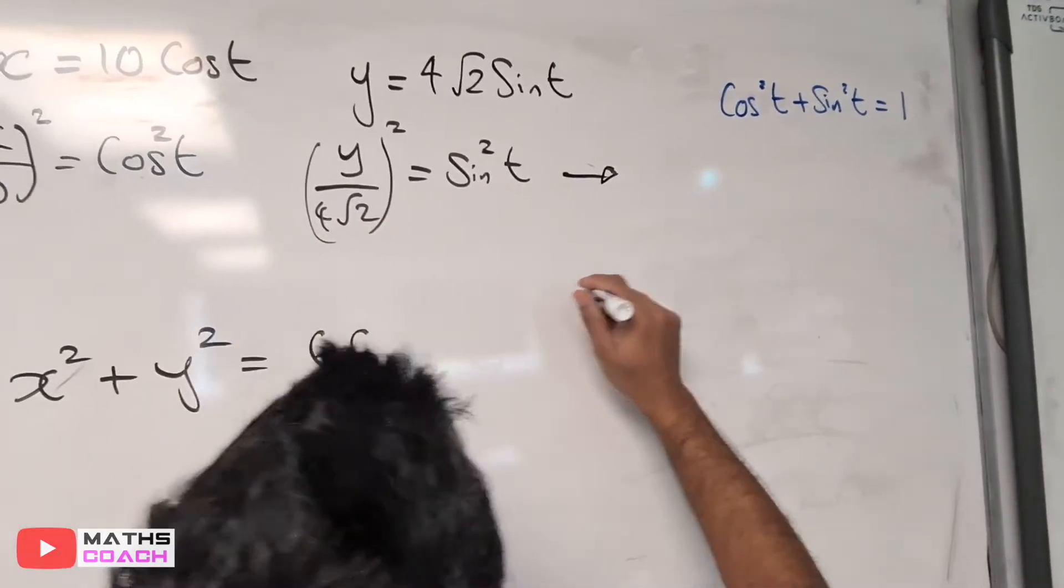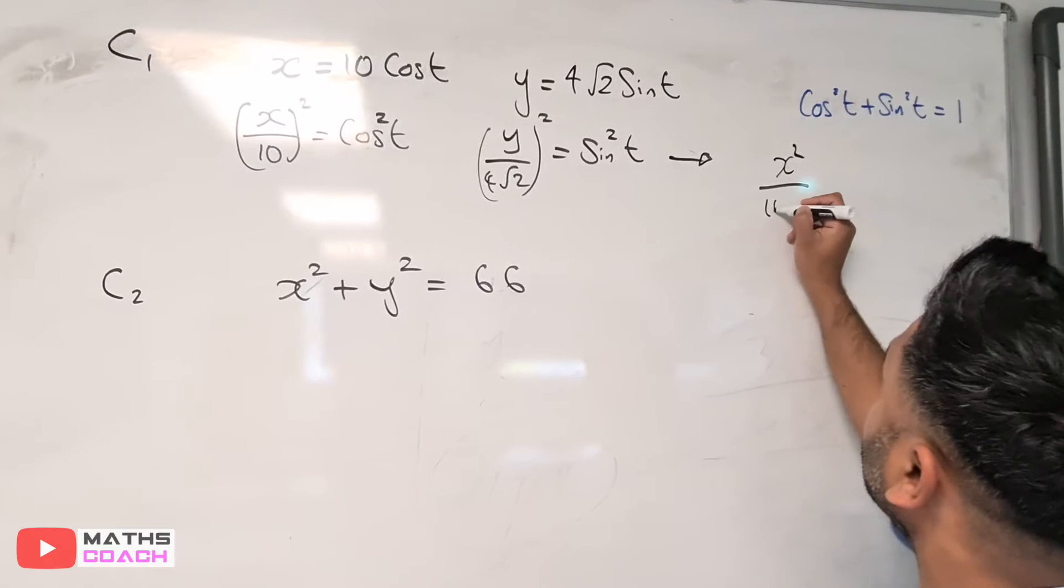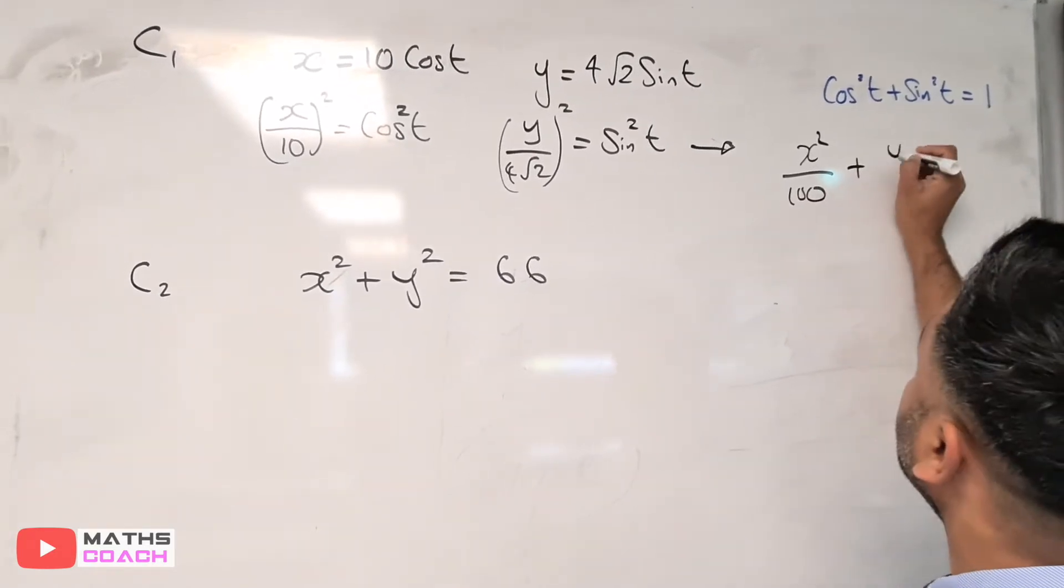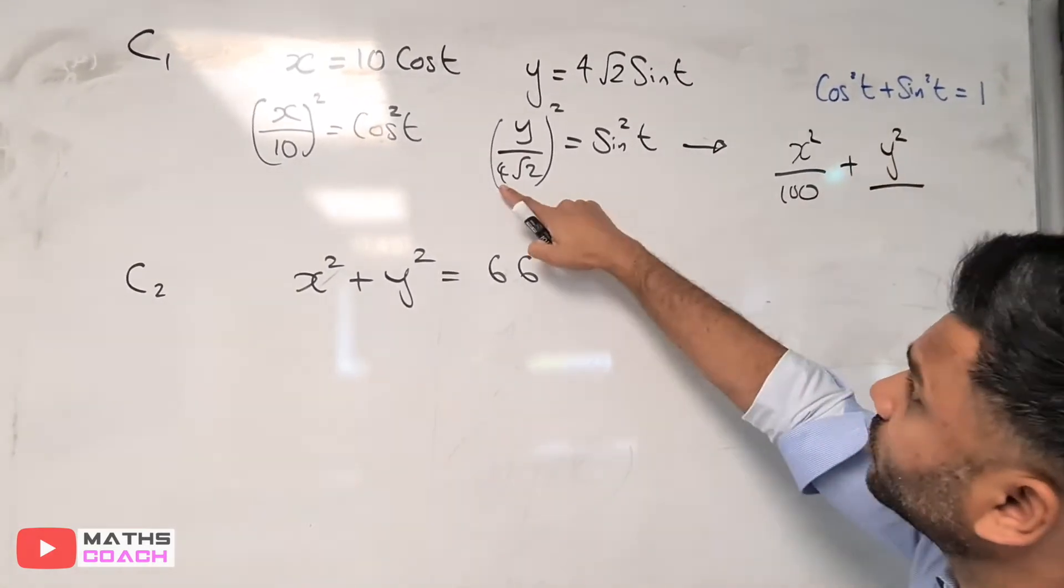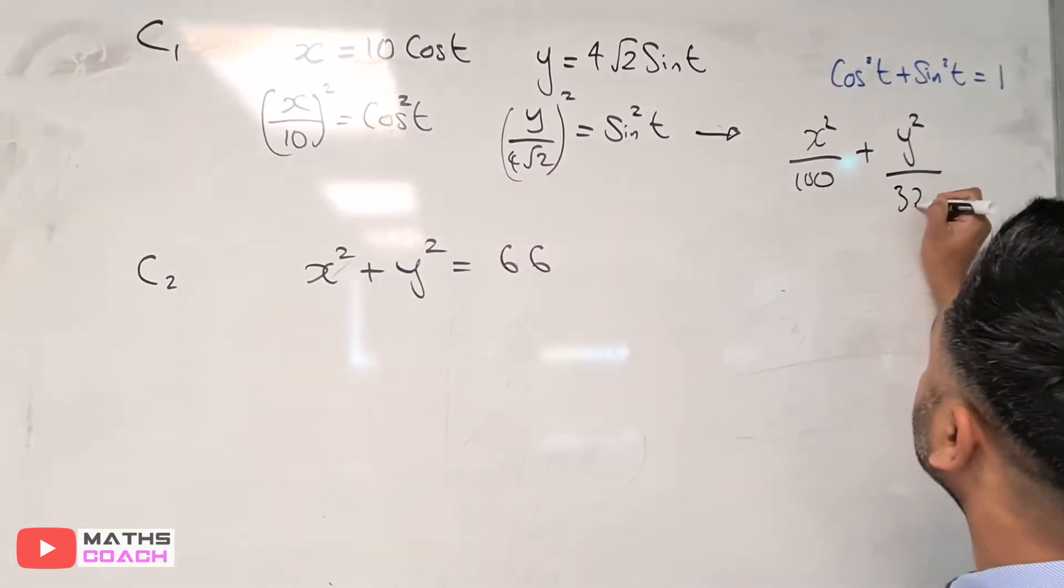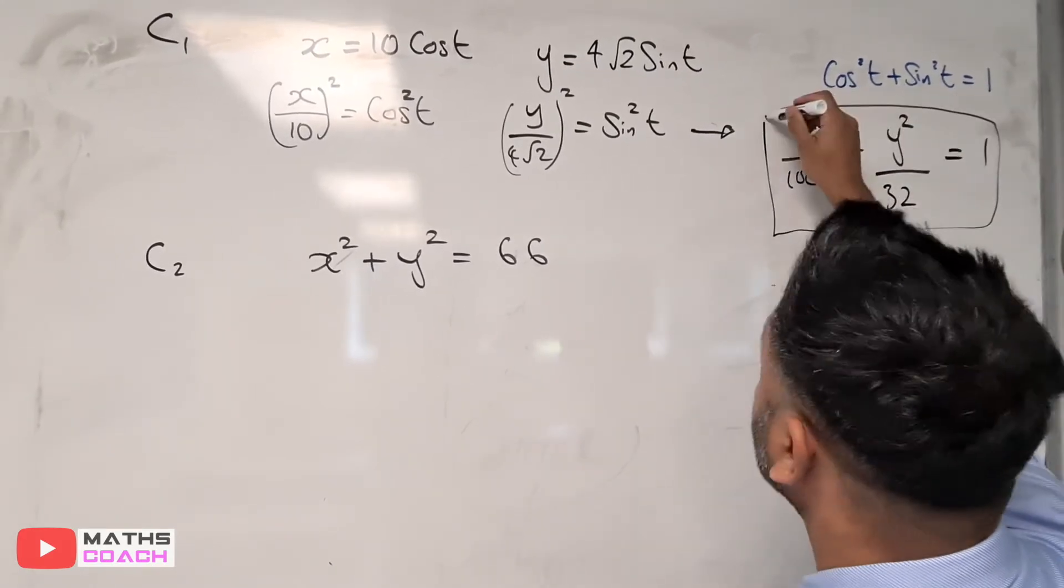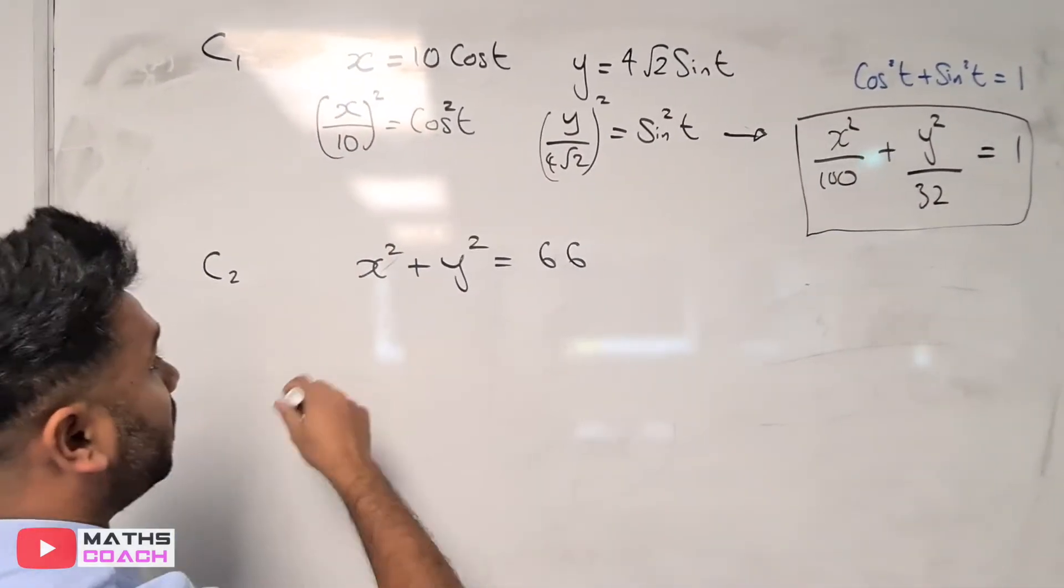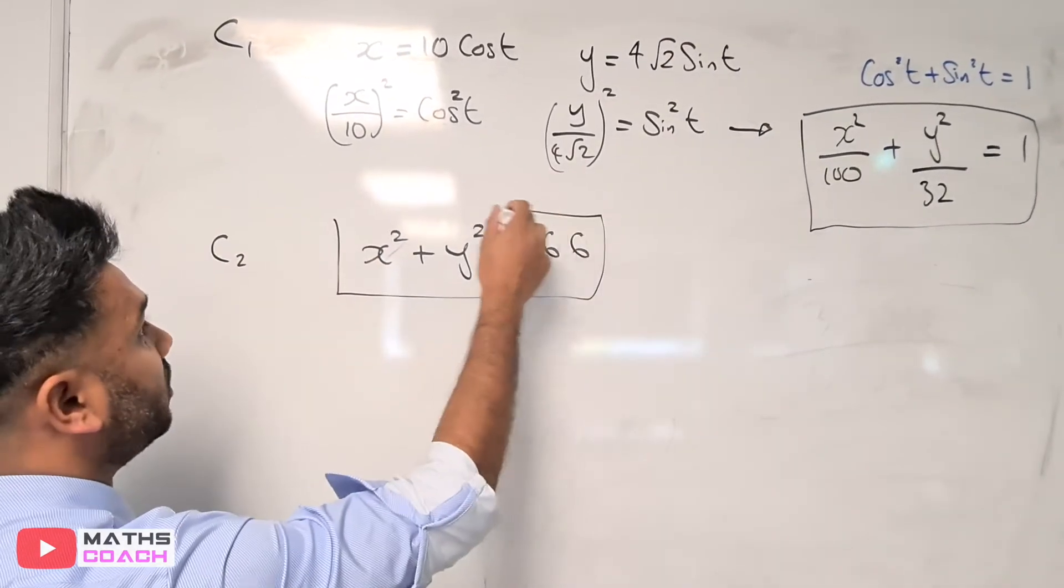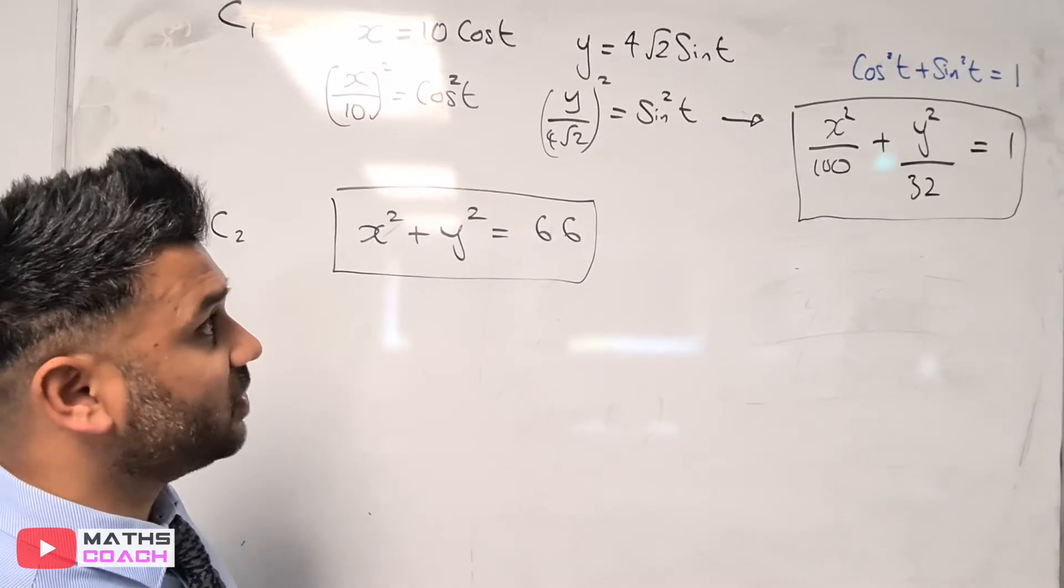Putting them into our identity, we have x²/100 + y²/32 = 1. That's because 4² is 16, √2² is 2, and 16 times 2 is 32. So we have our Cartesian equation for curve 1 and a Cartesian equation for curve 2. All we have to do now is solve them simultaneously.